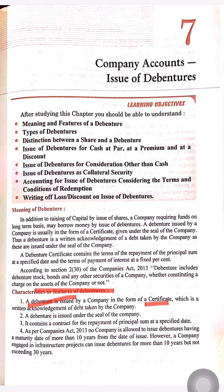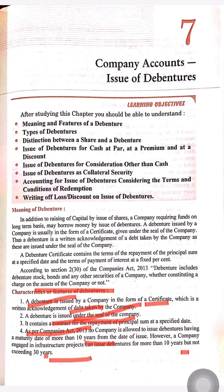Characteristics of debenture: First, a debenture is issued by the company in the form of a certificate, just like shares — it is a written acknowledgement of debt taken by the company. Second, it is issued under the seal of the company; without the seal, debentures cannot be issued. Third, it contains a contract for the repayment of principal sum at a specified date. As per the Companies Act 2013, no company is allowed to issue a debenture having a maturity date of more than 10 years from the date of issue. However, a company engaged in infrastructure projects can issue debentures for more than 10 years but not exceeding 30 years.